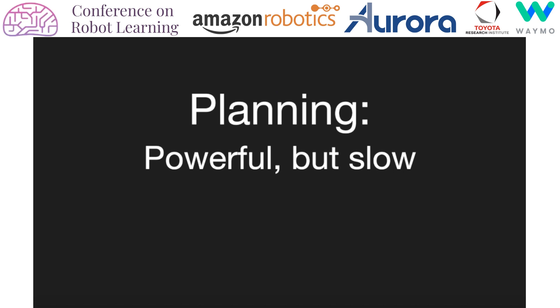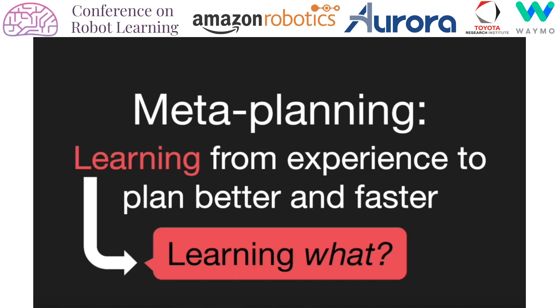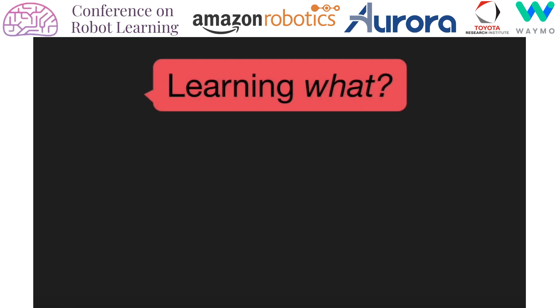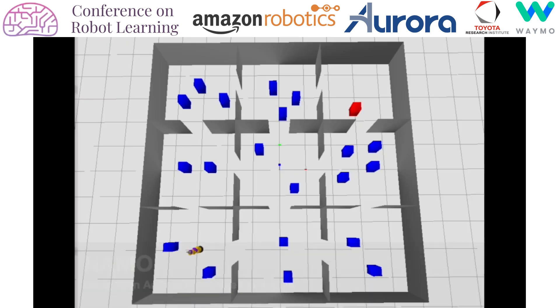Planning for robotics is powerful but slow. We are interested in meta-planning: learning to plan better and faster from previous experience. But what exactly should be learned? We propose that the agent should learn to impose constraints on itself to cut down the space of possible plans.